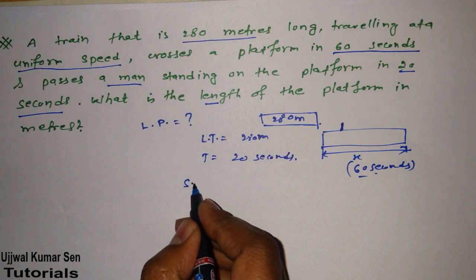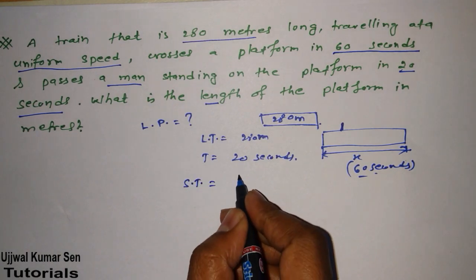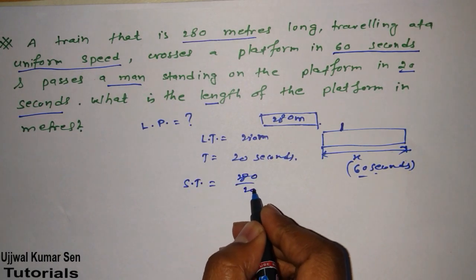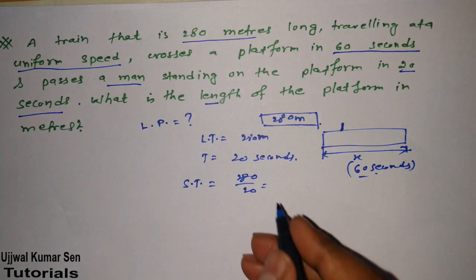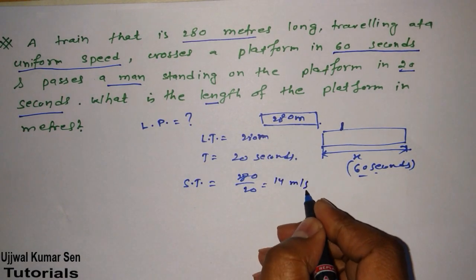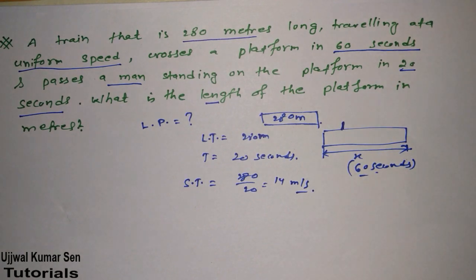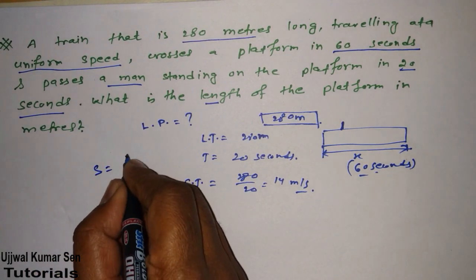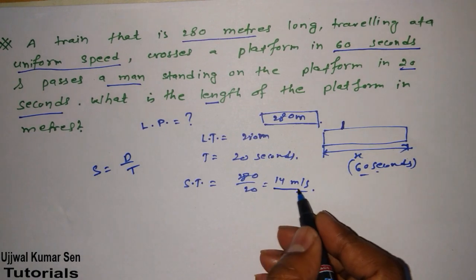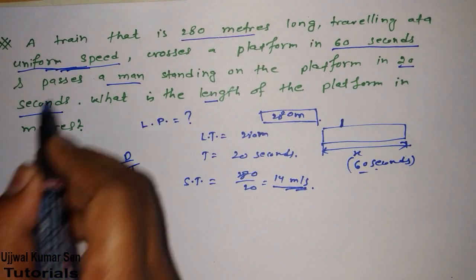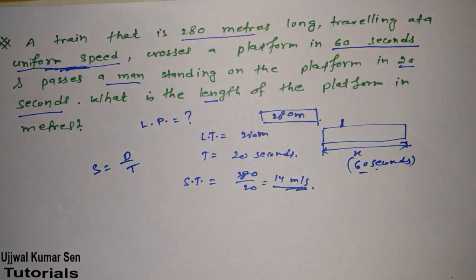Speed of the train equals 280 divided by 20, which gives us 14 meters per second. This is because speed equals distance divided by time. Since the train is traveling at uniform speed, this speed of 14 meters per second applies throughout.